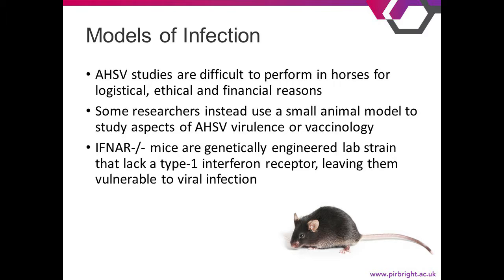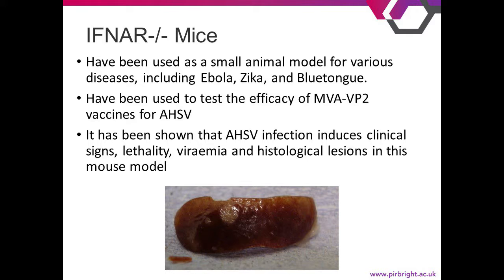The problem with horses for doing experiments is that they're quite large. So what AHS researchers have done is try to use a small animal model instead, and the go-to one at the minute is IFNAR mice — a genetically engineered lab strain that lacks a type 1 interferon receptor, leaving them vulnerable to viral infection. IFNAR knockout mice have been used as a small animal model for various virus pathogens including Ebola, Zika, and Bluetongue. They've also been used for African horse sickness virus, mainly to test vaccine efficacy, particularly MVA-VP2 vaccines. In this mouse model it's been shown that AHS infection causes clinical signs, lethality, viremia, and histological lesions. Here's a picture of a spleen from an IFNAR knockout mouse showing a white lesion caused by the virus.